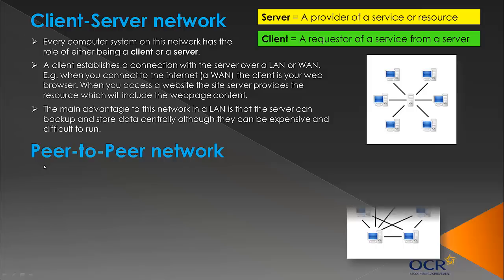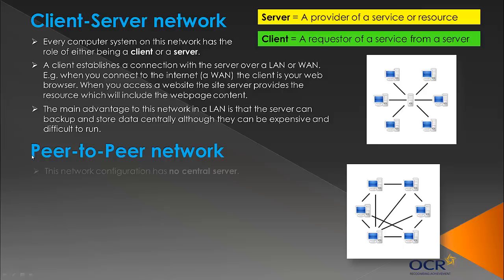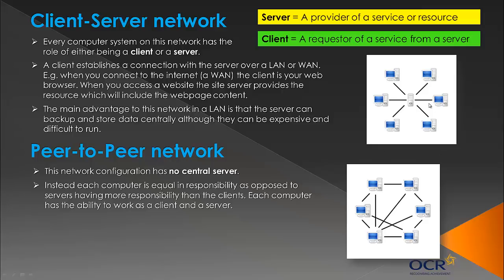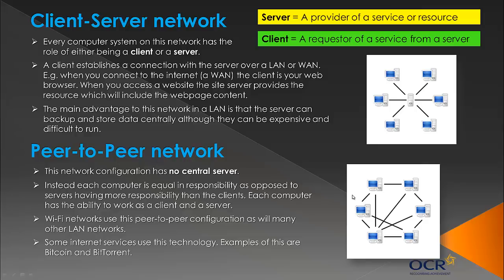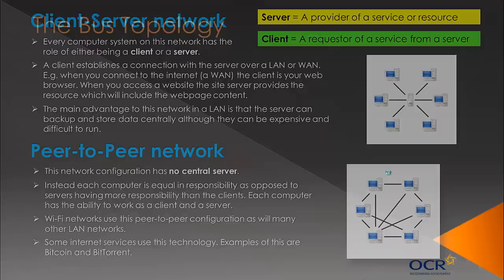The second type is the peer-to-peer network. Instead of a central server, computers connect directly with each other — that's what peer-to-peer means. Each computer has equal responsibility and can act as both a client and a server. Some Wi-Fi networks and internet services such as Bitcoin and BitTorrent use this configuration, where files are sent as packets from many different computers to each other, which is often better for anonymity and security as it's harder to trace.